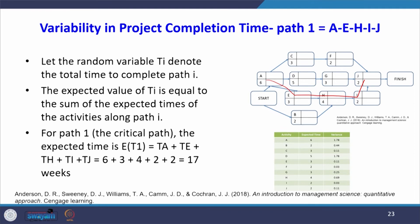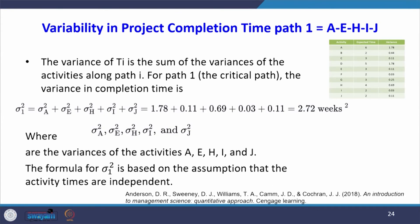Let the random variable T1 denote the total time to complete path 1. The expected value of T1 equals the sum of expected times of activities along the path: 6 + 3 + 4 + 2 + 2 = 17 weeks. The variance of T1 is the sum of the variances along path 1: 1.78 + 0.11 + 0.69 + 0.03 + 0.11 = 2.72. We must sum variances — not standard deviations.